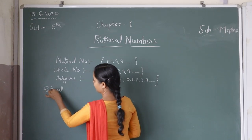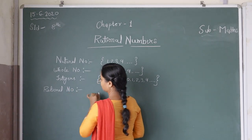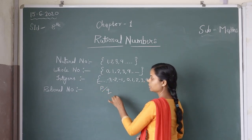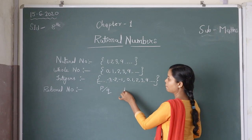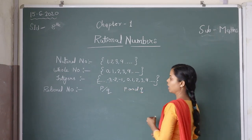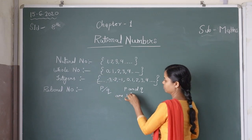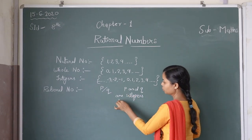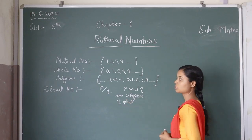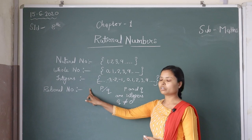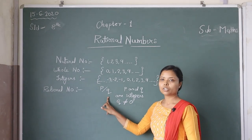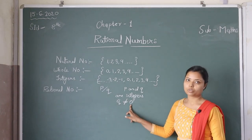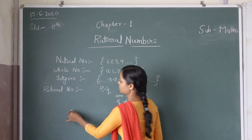Next one is rational numbers. A number which can be written in the form of p by q, where p and q are integers and q is not equal to zero. As we know, p is the numerator and q is the denominator, so the denominator is not equal to zero. These are rational numbers.